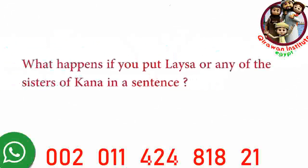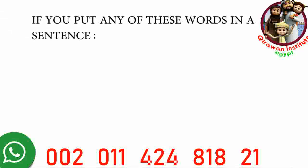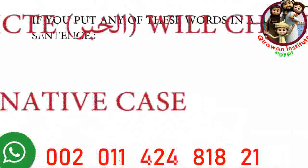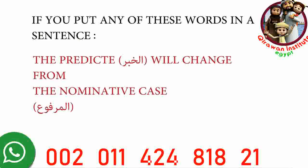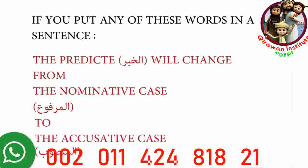So what happens if you put leysa or any of the sisters of kana in a sentence? If you put any of these words in a sentence, the predicate — al-khabar — will change from the nominative case, al-marfu'ah, to the accusative case, al-mansoom. Let's look at an example.